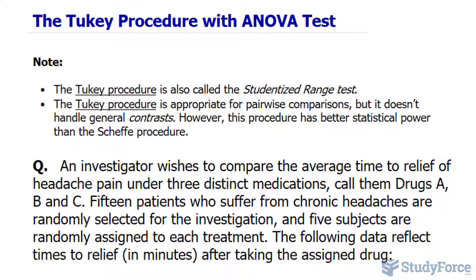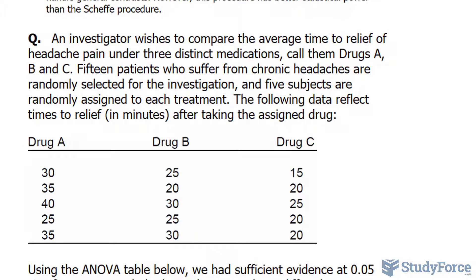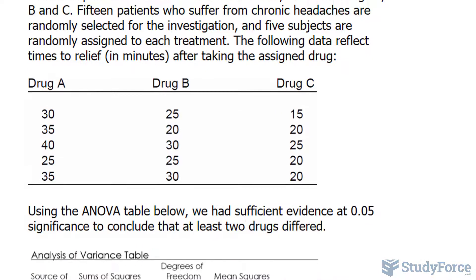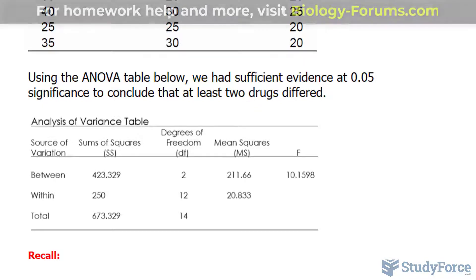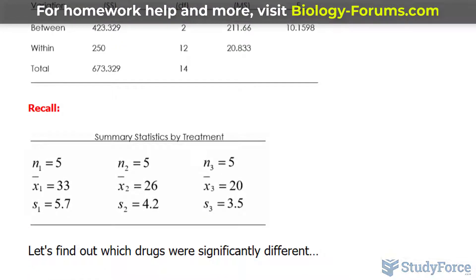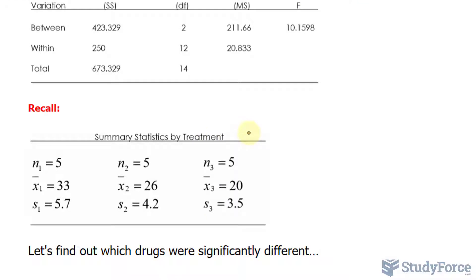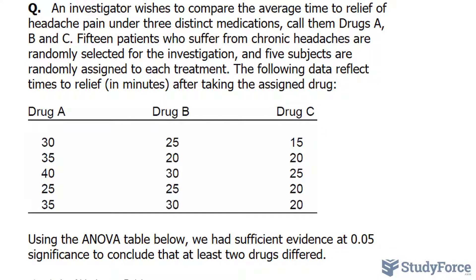In a previous video we looked at this example, and from it we created an ANOVA table. We're discussing drugs A, B, and C and seeing how fast they relieve headaches. From the given values we created that table and determined that we have to reject the null hypothesis, which said that all the means are the same. We also calculated the mean and standard deviation, summarized in this table. Now we need to find out which of the three drugs are most significantly different from one another.